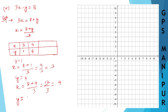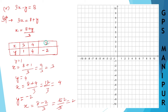Let me try y equal to minus 2. So x will be equal to 8 minus 2 divided by 3, which is 6 divided by 3, which is 2. So when y is equal to minus 2, x is 2.